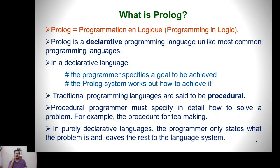What is Prolog? Prolog is a short form of 'programming in logic.' It is a declarative programming language, unlike most common programming languages. In a declarative language, the programmer specifies a goal to be achieved and the Prolog system works out how to achieve it. Traditional programming languages are said to be procedural, so a procedural programmer must specify in detail how to solve a problem.